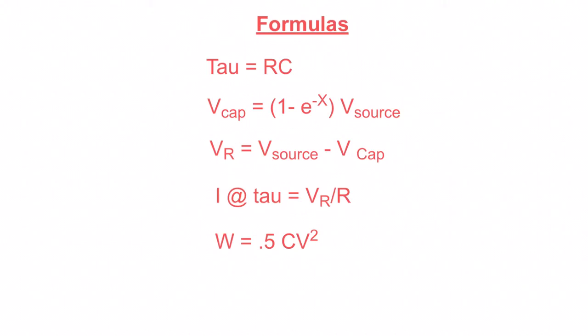And then to determine the current, well, it becomes quite easy. Once we have the voltage of the resistor, we're going to divide it by the resistance, because e over r equals i. It's just Ohm's law.